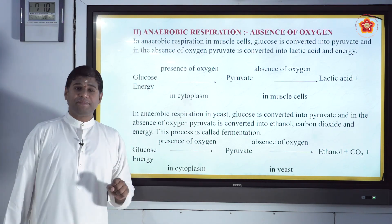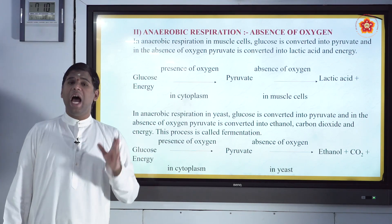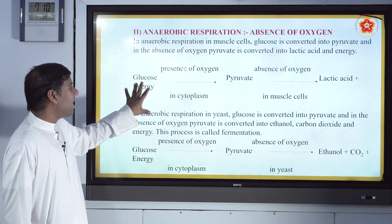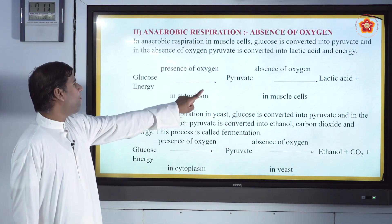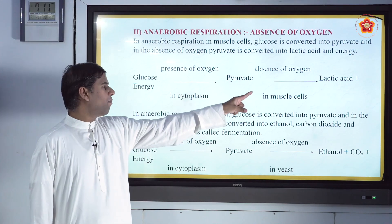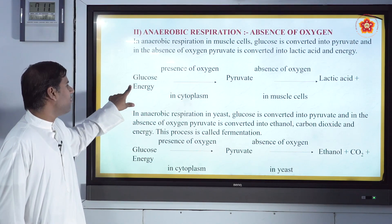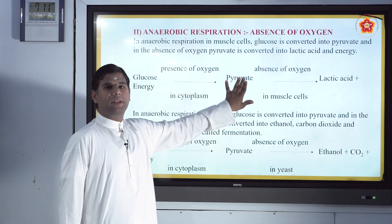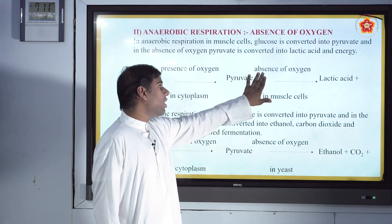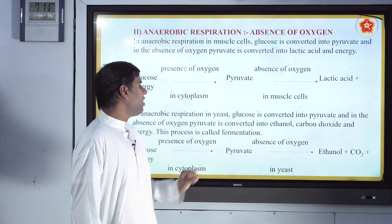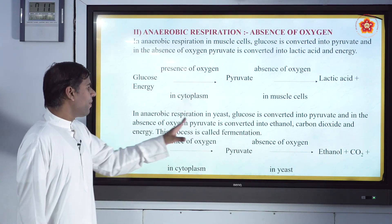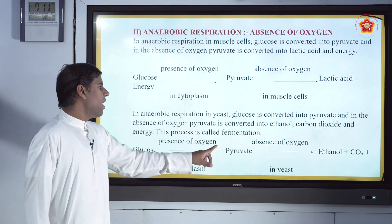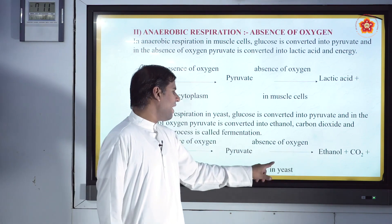Anaerobic respiration means absence of oxygen. In muscle cells, glucose is converted into pyruvate, and that pyruvate in the absence of oxygen is converted into lactic acid plus energy. Anaerobic respiration also takes place in yeast, where glucose is converted into pyruvate and then — in the absence of oxygen — into ethanol plus carbon dioxide.